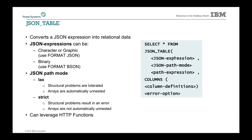Let's talk about JSON_TABLE. It allows you to take a JSON expression and convert that JSON data into relational data. JSON has its tags and values — it'll parse that and build it into a database structure for you. Your JSON expressions can be character, graphic, or binary. There are some structural problems we tolerate, and some arrays are automatically unnested. You can do this in strict or lax mode.